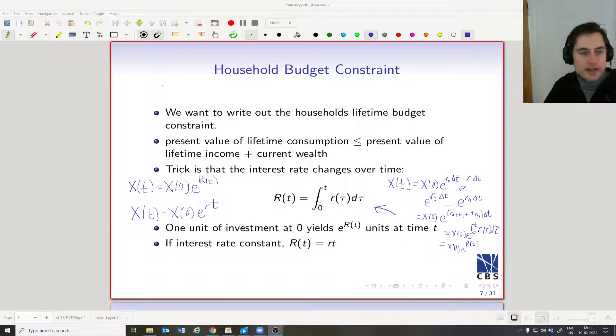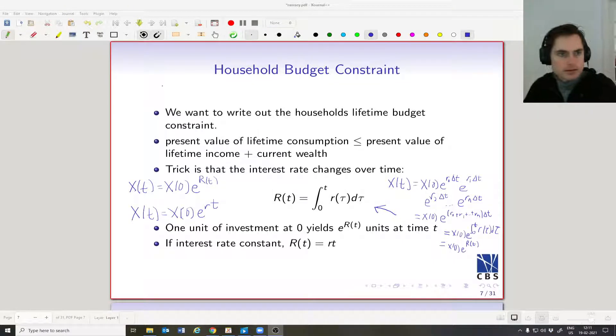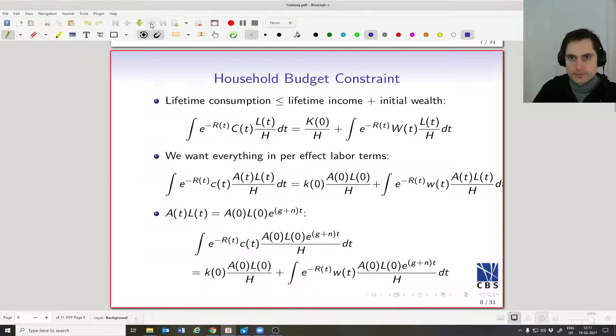Continuing with our discussion of the household's budget constraint. In words, we want lifetime consumption to be less than or equal to lifetime income plus whatever initial wealth the household starts out with.